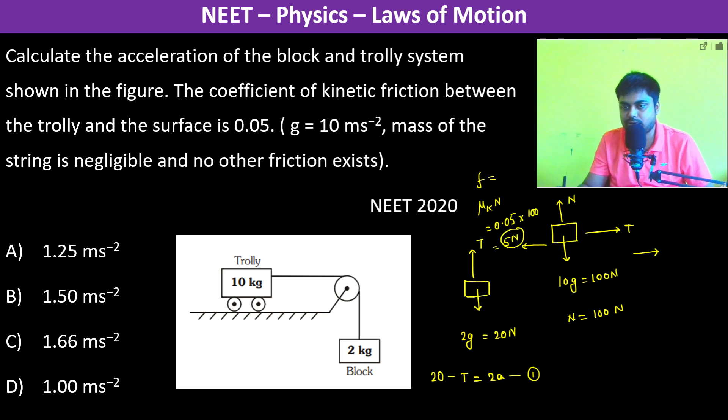So therefore we can write, acceleration is in this direction A, so T minus 5 is equal to 10 into A.